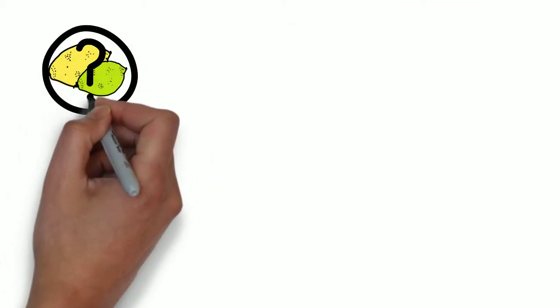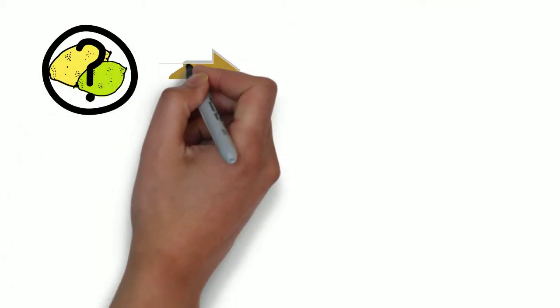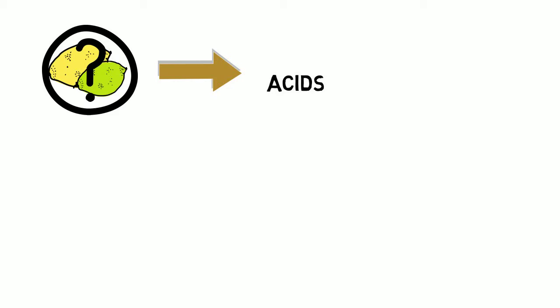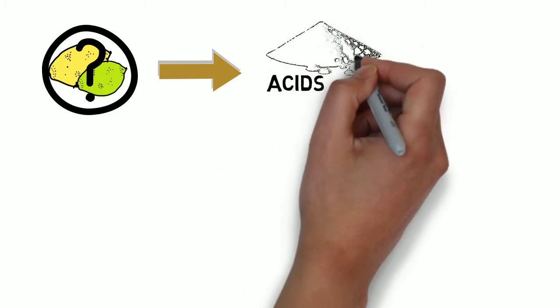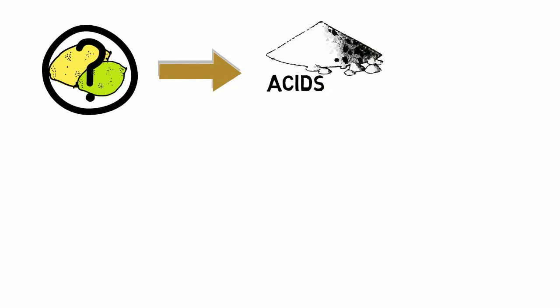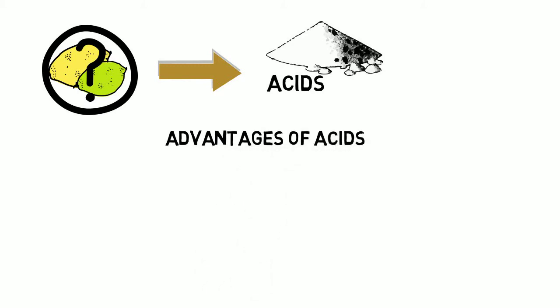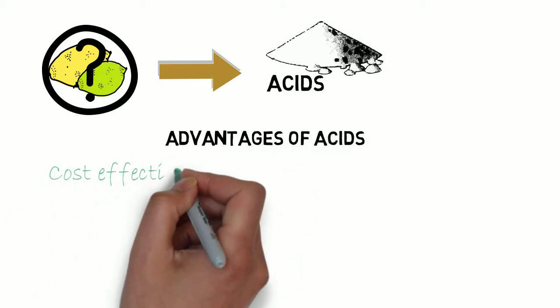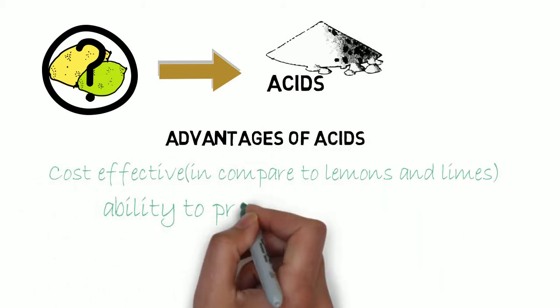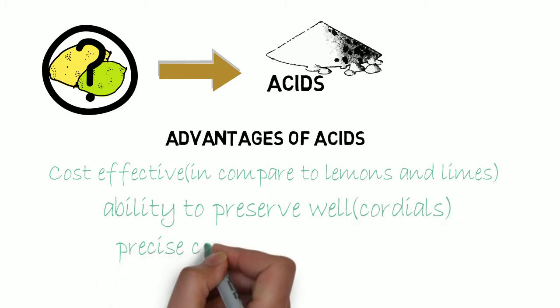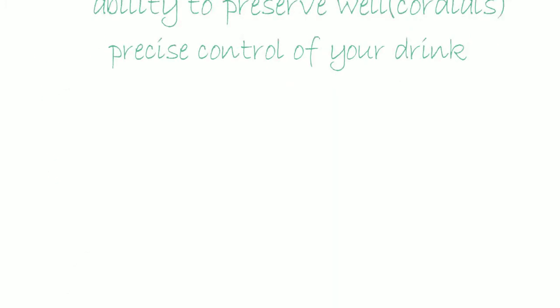When we think of substituting citrus fruits, there is an obvious choice of acids, which occur naturally in citrus fruits and are available in powdered form. Although you can't completely substitute the complex flavor and aroma of freshly squeezed citrus juice, when used right there are certain advantages: they are cost-effective compared to lemons and limes, preserved well, and you have precise control over the sourness of your drink.